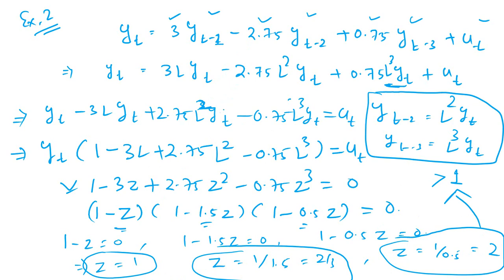That is the way you can theoretically determine which series is stationary and which is not. Given a mathematical expression of a time series with its lags and coefficients, you should be able to find the stationarity using this approach. You can take more examples to check stationarity of different time series. For more videos, subscribe to our channel, and visit our website linked in the description.